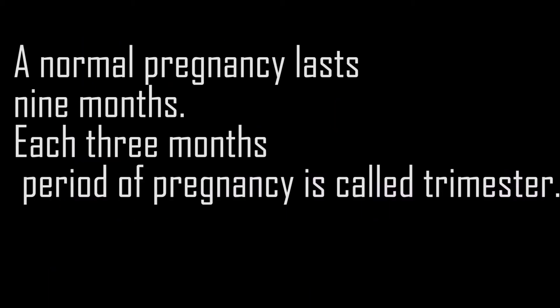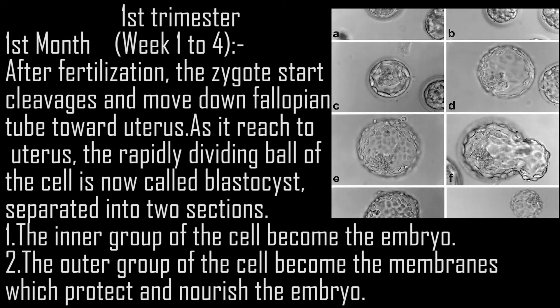Human Early Embryonic Development. A normal pregnancy lasts 9 months. Each 3-month period of pregnancy is called a trimester.